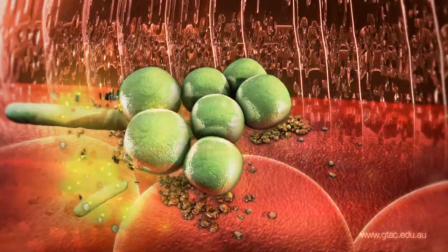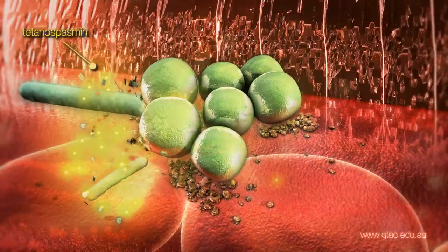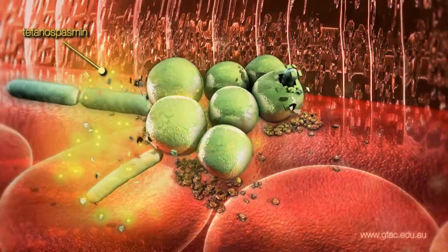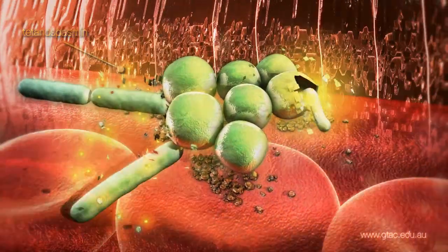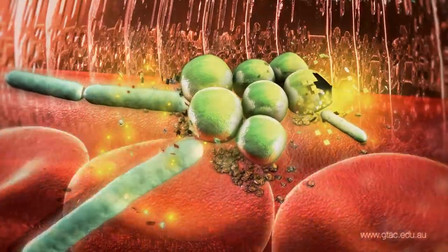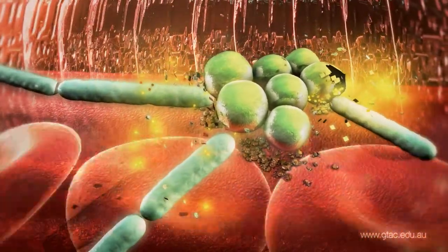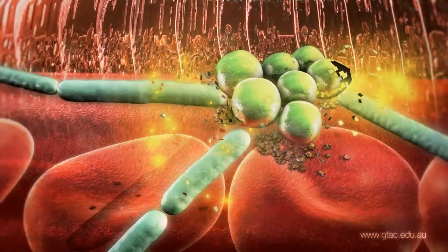The spores also release a toxin called tetanospasmin which enters the bloodstream. Bacterial numbers increase as they grow and divide.